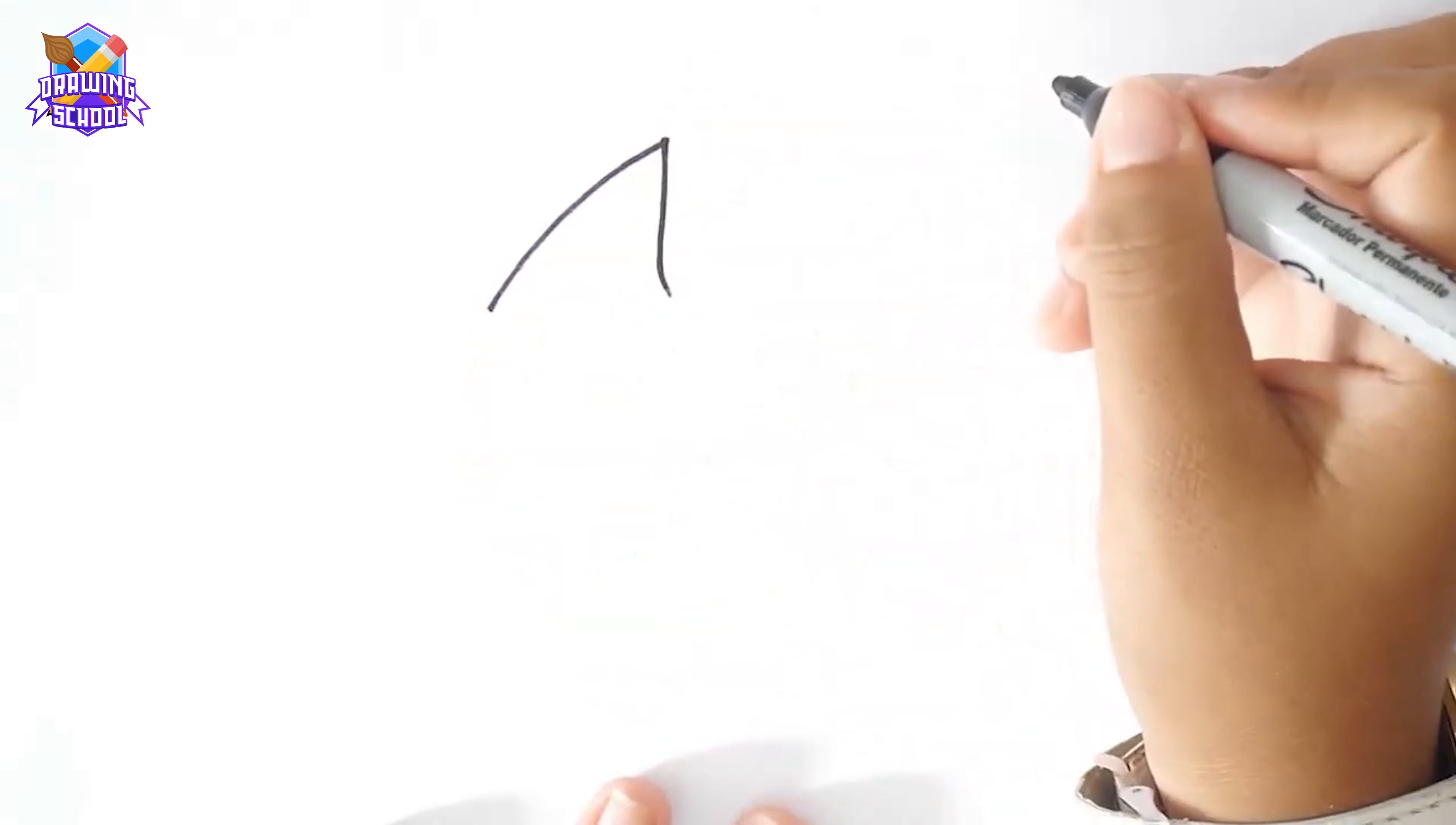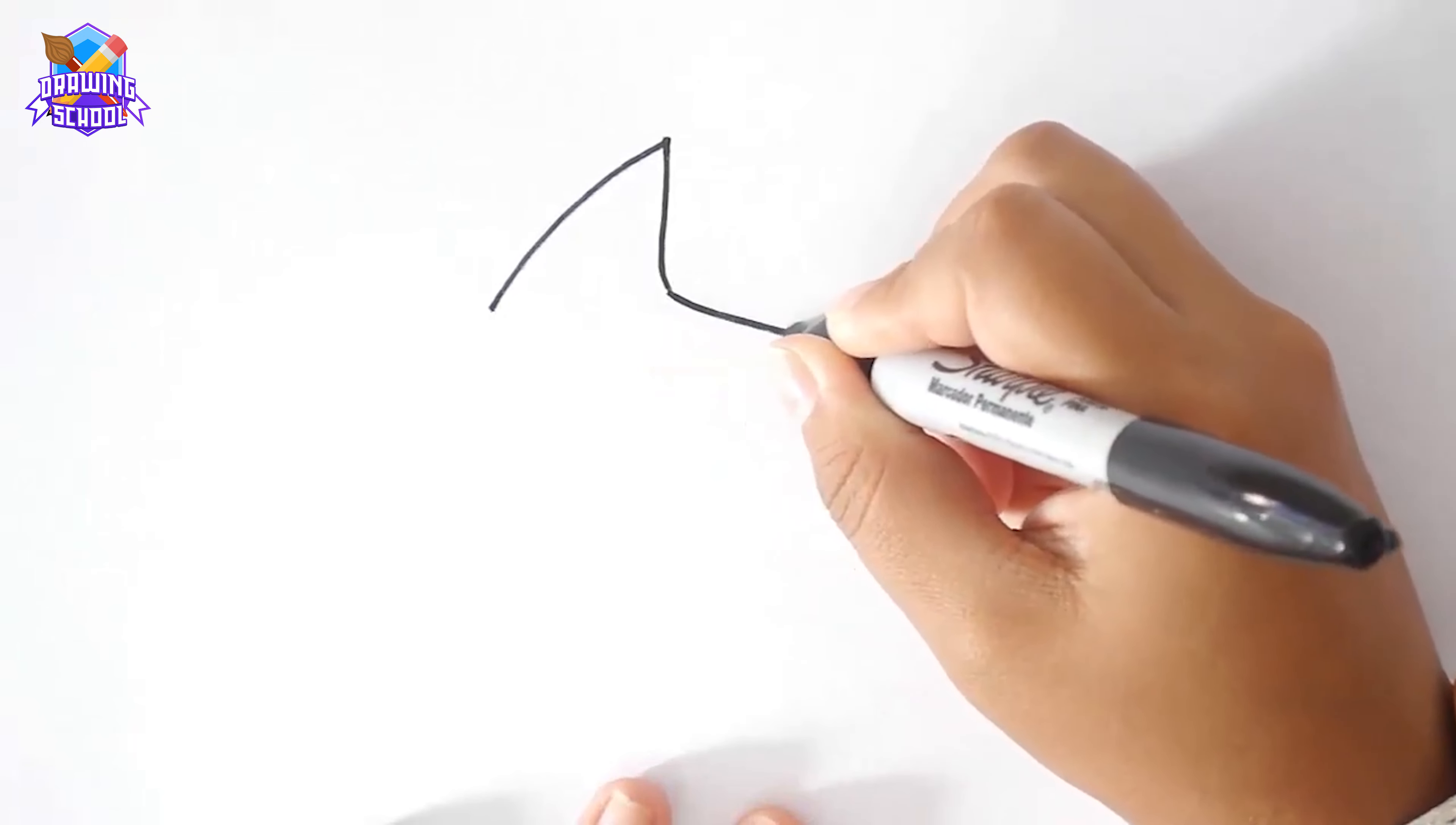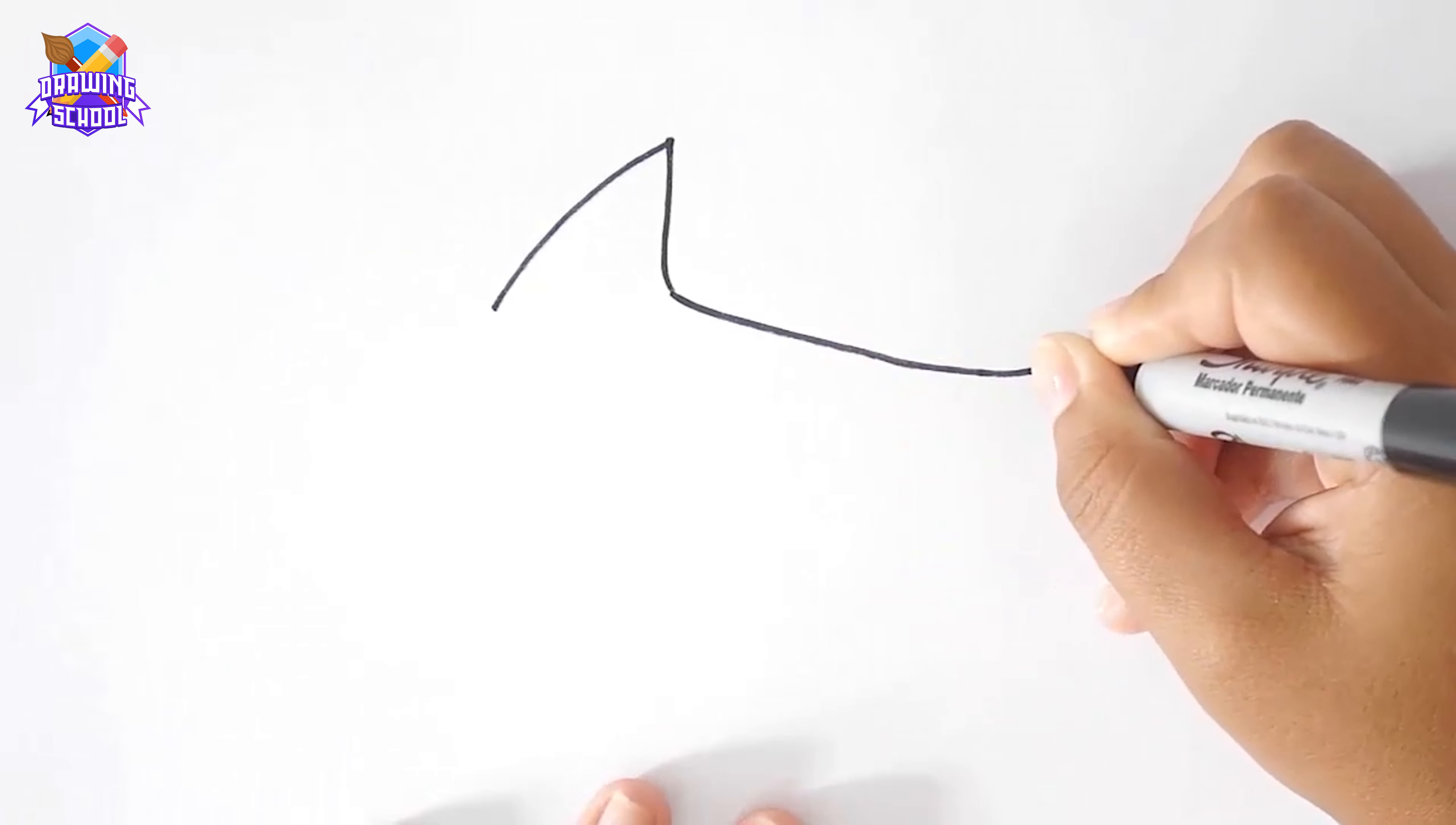First of all, we're going to do an inverted V-shape in the upper part of our paper sheet and a curved line up to here.